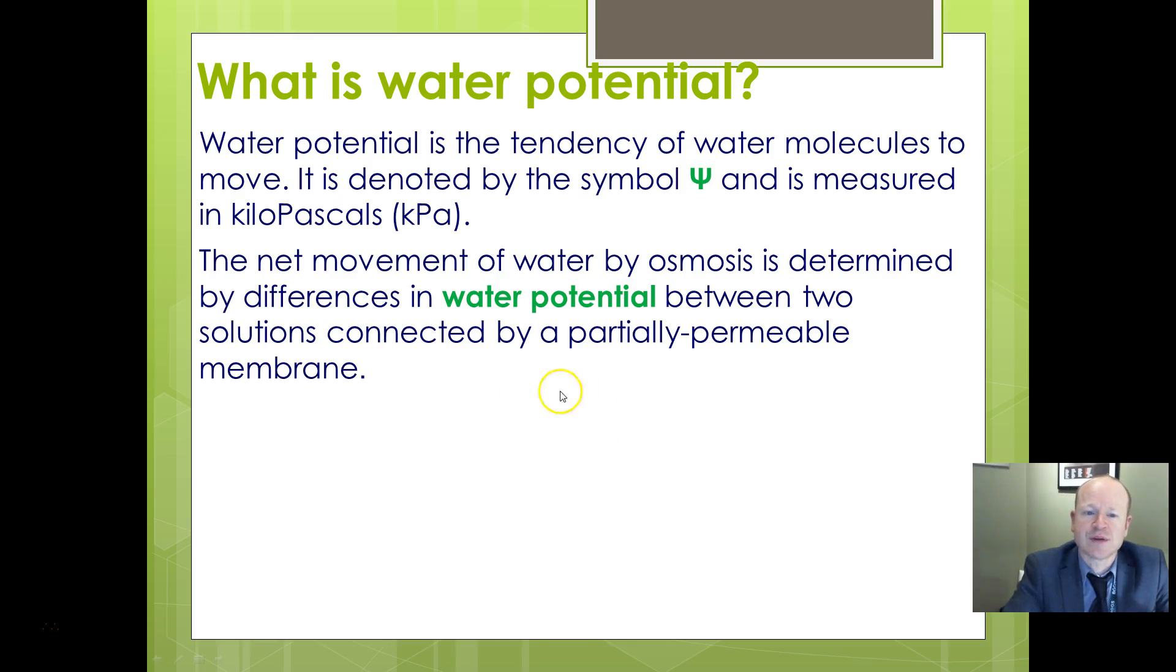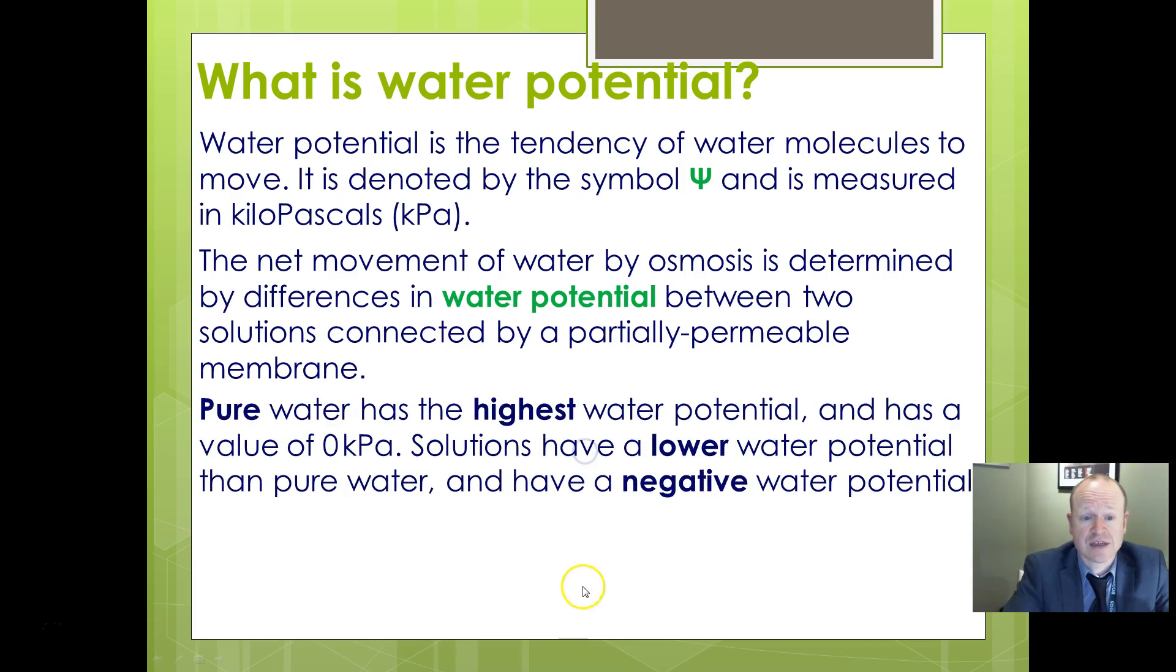The net movement of water molecules by osmosis is determined by differences in water potential. Pure water has the highest possible water potential because it is all water - there is no solute dissolved, and therefore it is the one with the highest water potential, the highest potential for water to move out of it to something else which has solute dissolved in it. So pure water has a value of 0 kPa. Anything with a lower water potential has a negative value, so you can't have positive water potential values, or we're not going to think about those. It's 0 kPa or a negative value. The lower the water potential, the more negative something becomes.